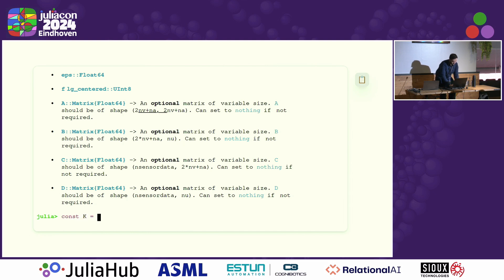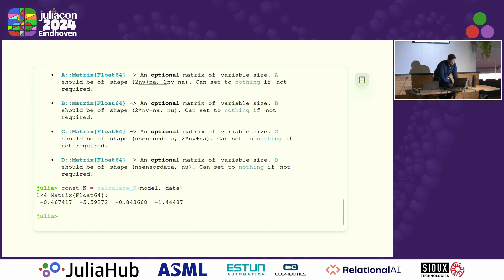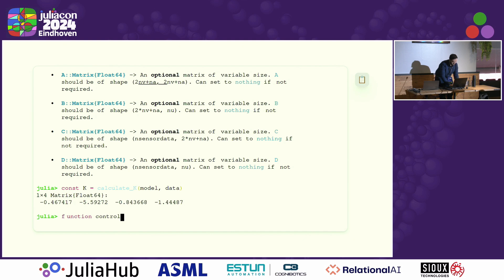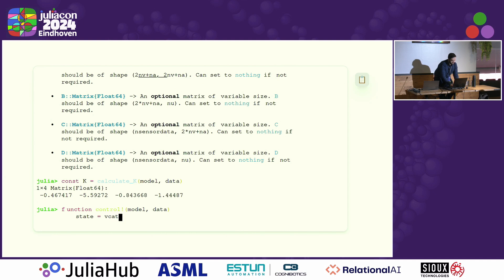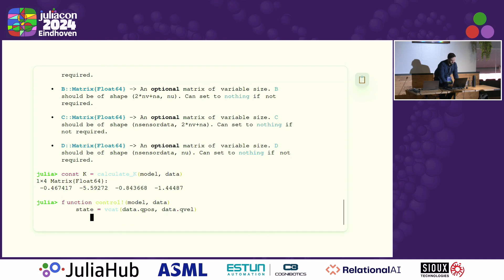Now I'll continue building the controller. We need a K object — basically a spring constant, a restoring force to keep the cart balanced. A controller is just a function that takes model and data as input arguments and sets the control property of the data struct. Inside, I construct the state by concatenating the position vector and velocity vector, then broadcast into the control array to set the actuators.